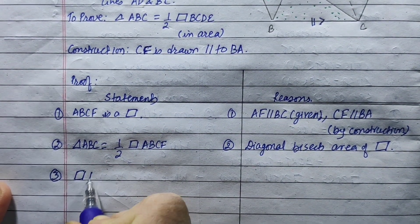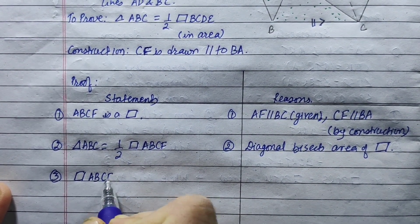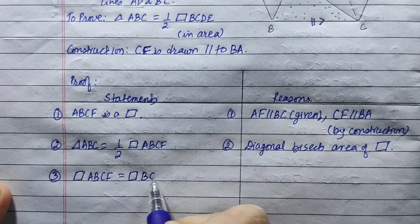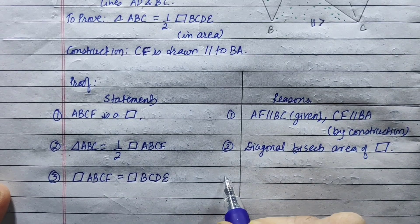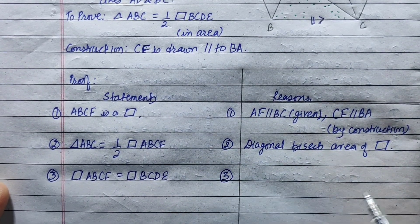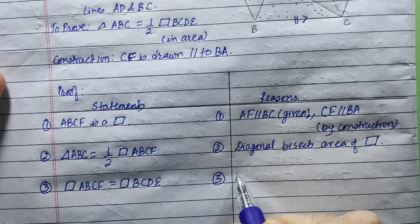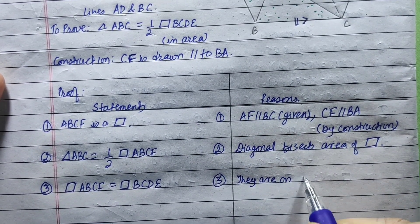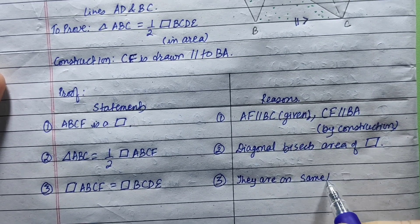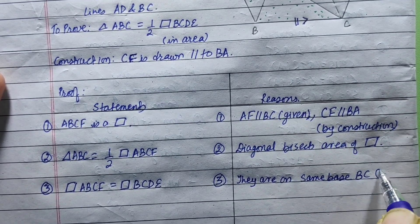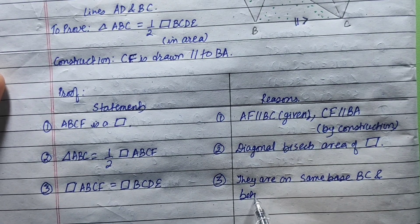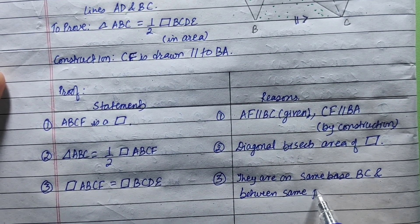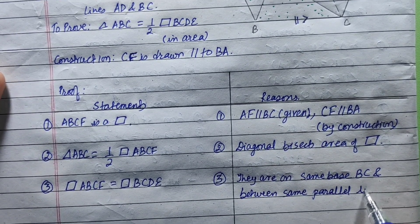Parallelogram ABCF equals parallelogram BCDE. They are on the same base BC and between the same parallel lines.